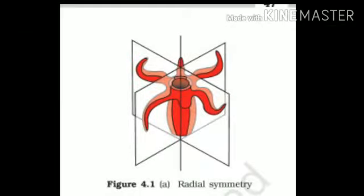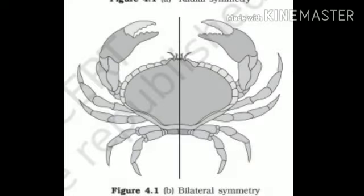The first picture is radial symmetry, where we see the body divided into many planes. The other is bilateral symmetry, where we see the body has only identical left and right halves.